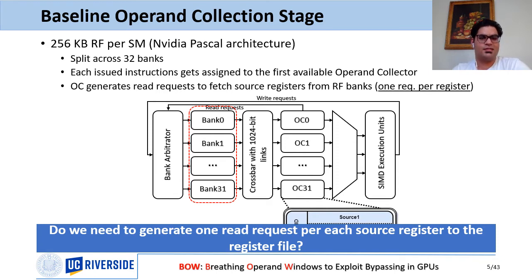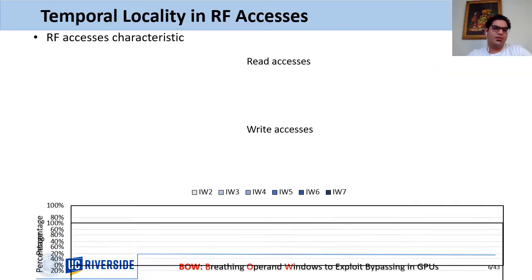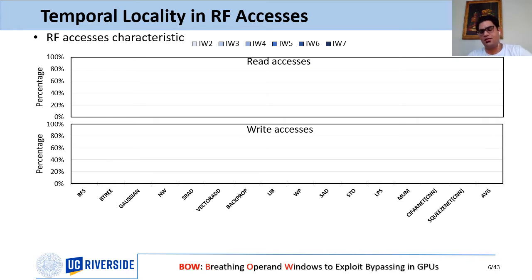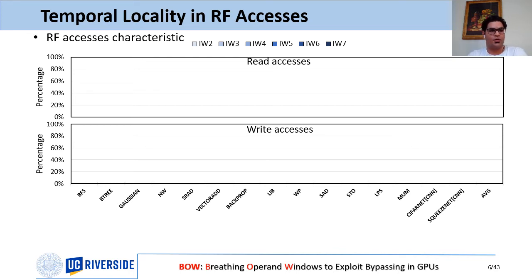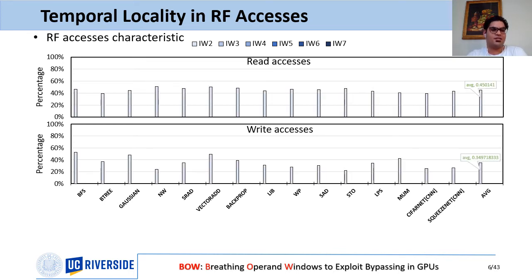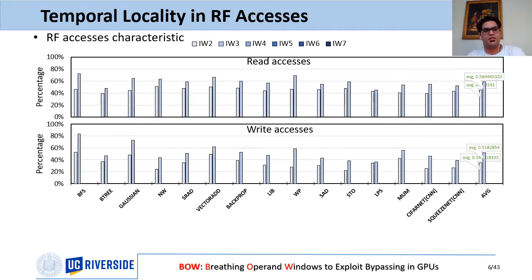The question is: do we really need to generate one separate register file read request per source register? The answer is no. We characterized temporal reuse opportunities across 15 applications for different instruction window sizes. With a window of only two consecutive instructions, we can bypass 45% of reads and 35% of writes to the register file. A window of three instructions eliminates substantially more: 58% of total reads and 52% of total writes on average.